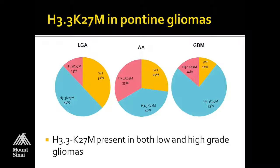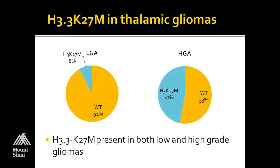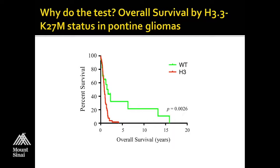In the thalamus, about 50% of high-grade astrocytomas in a pediatric population are going to have the histone mutation. Even within our low-grade astrocytomas — something that looks like a diffuse astrocytoma grade 2 — about 10% will have a histone mutation if present in that location. It's important to think about it even if you have a low-grade glioma.